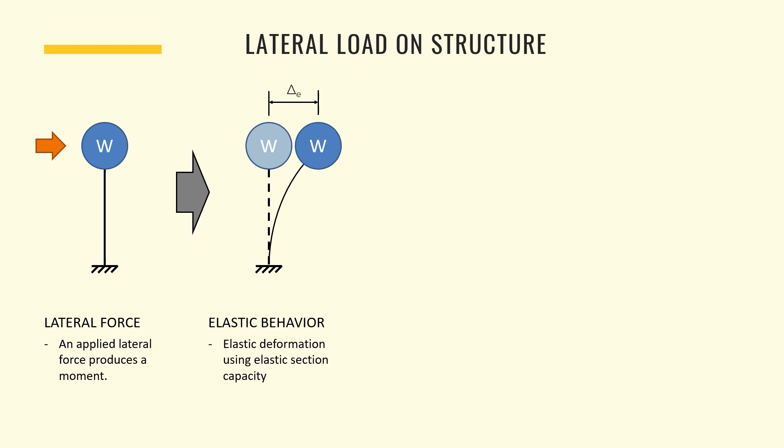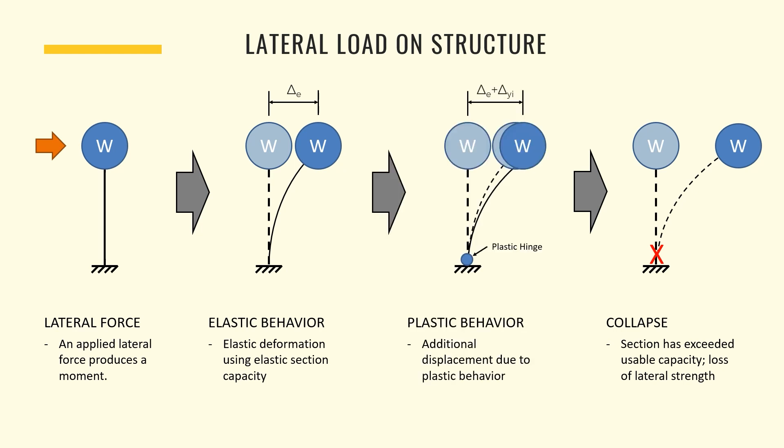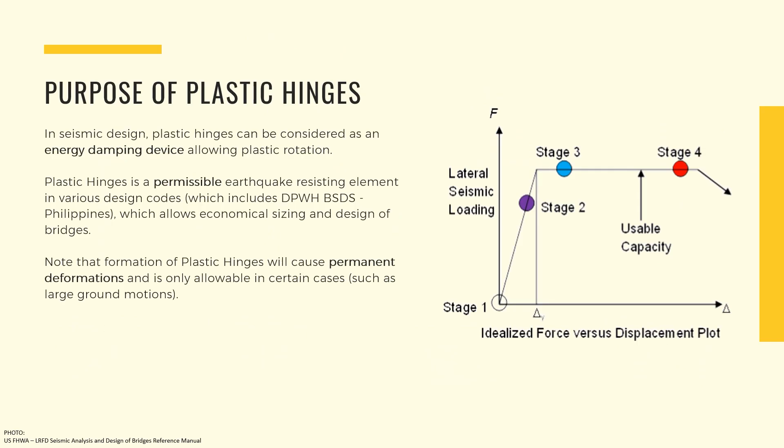We start with applying a lateral force on the structure, which will cause our structure to deflect a value of delta E. Note that deformations at this point are still reversible because we are still under elastic behavior. Ultimately, assuming the force is high enough, our structure will not be able to resist the lateral force, reaching the collapse stage, wherein a section has exceeded usable capacity and there is a loss of lateral strength. But consider that between the elastic and collapse stages, our structure will still be able to retain lateral strength, accommodating a deflection equal to delta Yi. However, deformations at this point are not reversible. You may be asking, what is the purpose of plastic hinges? Isn't it bad to have permanent deformations in our structure, or can it lead to collapse?